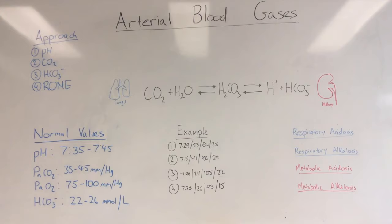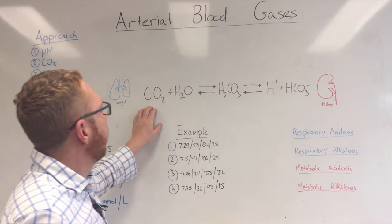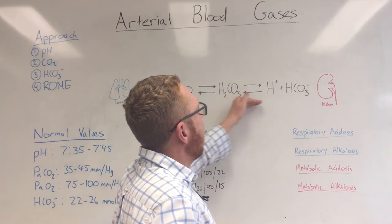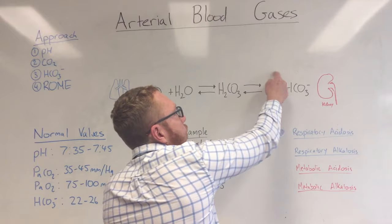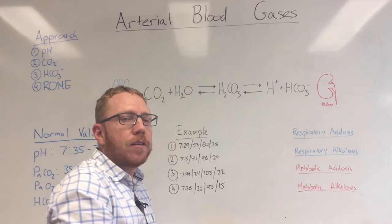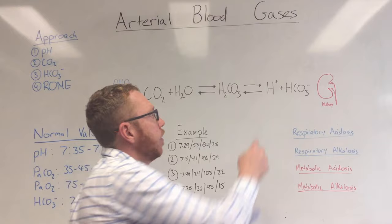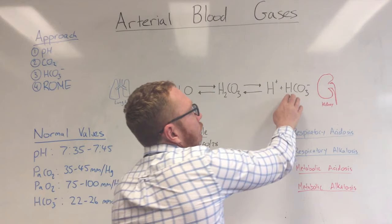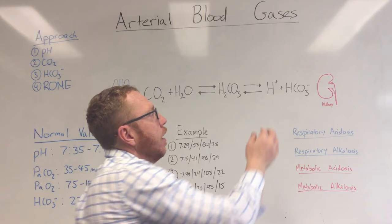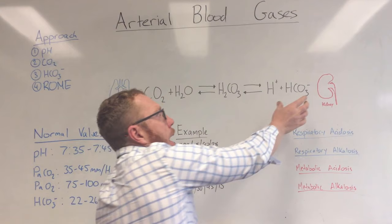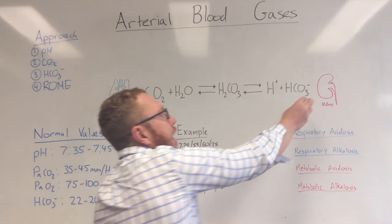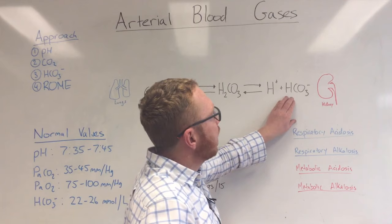Looking at the other end of the equation: carbonic acid can reversibly dissociate in your body — particularly at the kidney end — into hydrogen, which is an acid, and bicarbonate, which is a base. Bicarbonate is only regulated by the kidney; the kidney is the only organ that can really play around with bicarbonate levels. For that reason, we call bicarbonate levels metabolic.